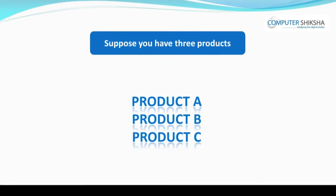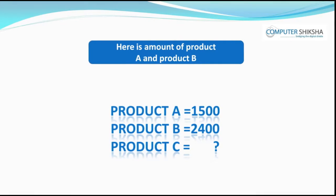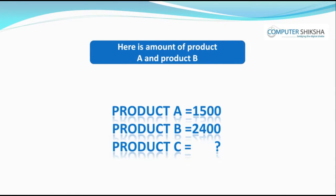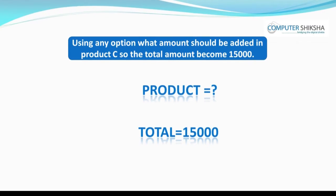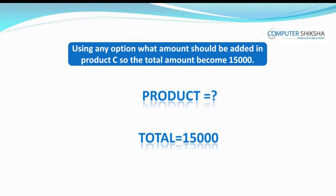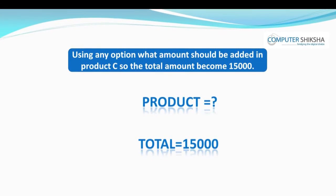Suppose you have 3 products with a target total of 15,000 per year. Product A is 1,500 and product B is 2,400. How much should product C be so that the sum equals 15,000? Which option will you use? Show how this will be done.